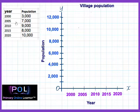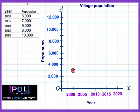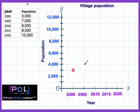Now, after we have done that, it's time to look at the population against the years. In 2000, it was 3,000 — so this is 2000, we go up to 3,000. Then we go on to 2005; it was now 7,000 — 2005, up to 7,000, there.